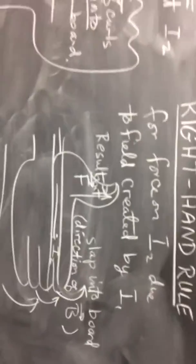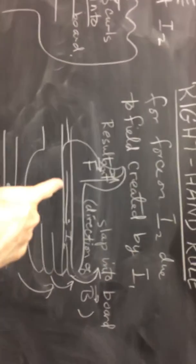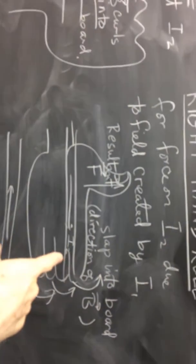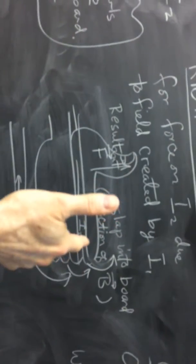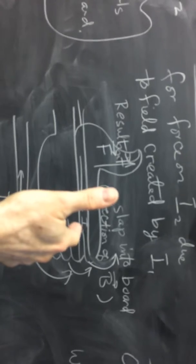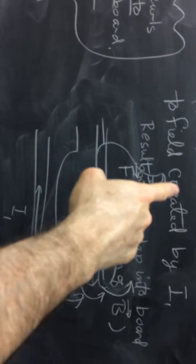Secondly, I'm going to use this right-hand rule to figure out what force is exerted. Here is I2, the second wire. I'm going to put my fingers in the direction of I2, and I'm going to slap into the direction of B, which I already showed was into the board. If I do that, my thumb is going to point in the direction of the resultant force.